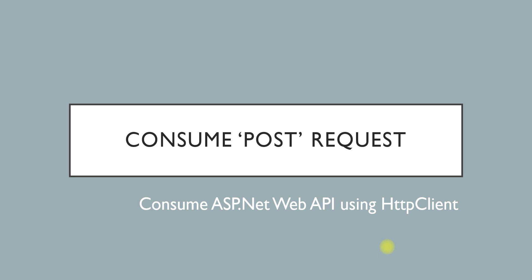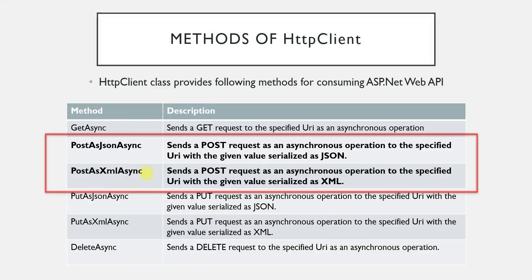This video is all about consuming a POST request. Whenever you want to consume a POST request, you have two options: the first is PostAsJsonAsync and the other is PostAsXmlAsync. When using PostAsJsonAsync, the data you send is serialized as JSON, and with PostAsXmlAsync it is serialized as XML — that is the only difference. I will cover PostAsJsonAsync here and suggest you try PostAsXmlAsync on your own.